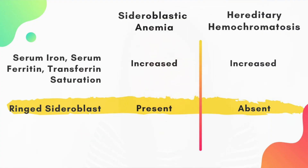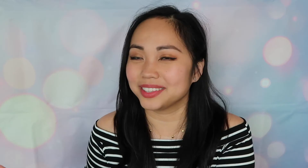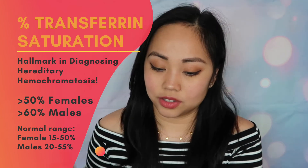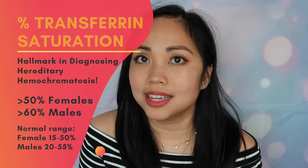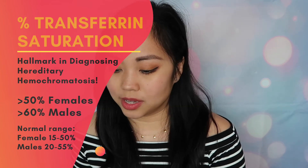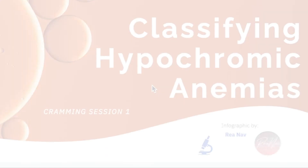Sideroblastic anemia and hereditary hemochromatosis are similar in iron studies because both involve excess iron. The key difference is the ringed sideroblasts — if they're mentioned, it's sideroblastic anemia. Both show increased iron, increased ferritin, and increased transferrin saturation. For hereditary hemochromatosis, the hallmark is transferrin percent saturation greater than 60% in males and greater than 50% in females.